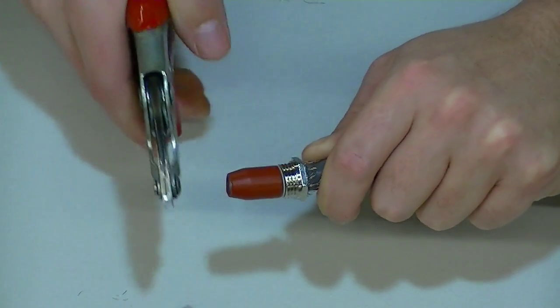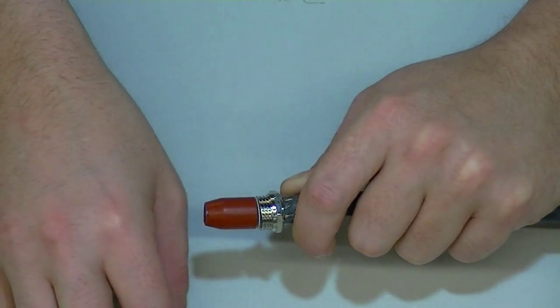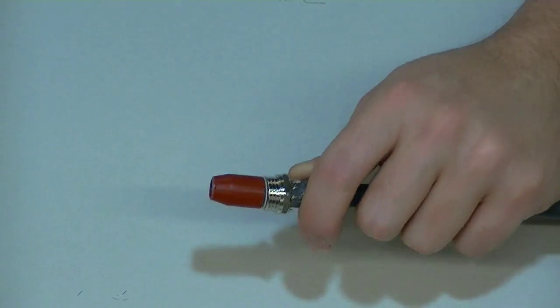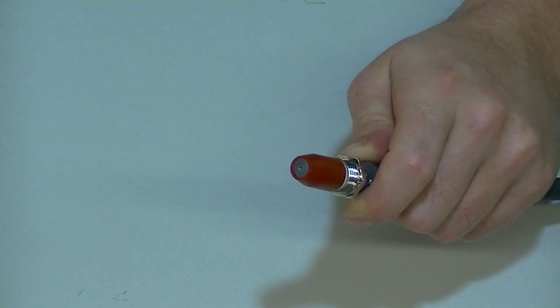Next, trim off the excess internal cable insulation so that the internal cable insulation is flush with the end edge of the red sealing piece.